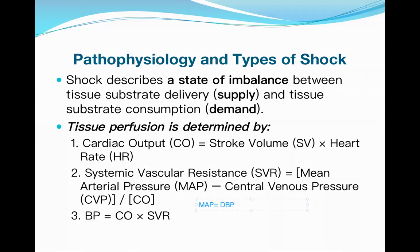Mean arterial pressure (MAP) equals diastolic blood pressure plus one-third of the pulse pressure. Pulse pressure (PP) is the difference between systolic and diastolic blood pressure: systolic minus diastolic equals pulse pressure. Therefore: MAP = diastolic BP + (1/3) × pulse pressure. Never forget this formula.